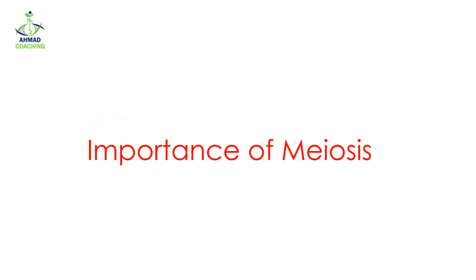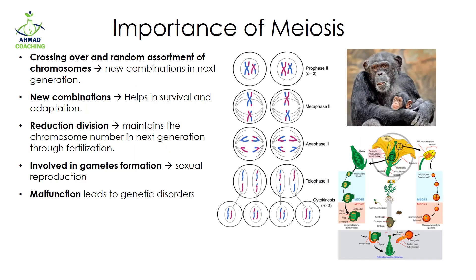Welcome to Ahmed Coaching. I'm your teacher Dr. Anam. Today we will study the importance of meiosis. The first importance is that crossing over and random assortment of chromosomes lead to new combinations in the next generation. In the process of crossing over, some genetic material is exchanged between chromatids of homologous chromosomes.